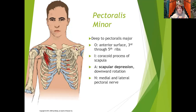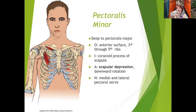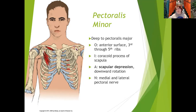The pectoralis minor is deep to the pec major. Its origin is the anterior surface of the third through fifth rib, which is inferior to its insertion. When the insertion moves toward the origin, the scapula gets depressed. The insertion is the coracoid process of the scapula — that little finger-like projection on the anterior part. The pectoralis minor is also part of the force couple for downward rotation, making it the 'Eeyore of muscles' — always down. It gets the medial and lateral pectoral nerve, just like the pec major.